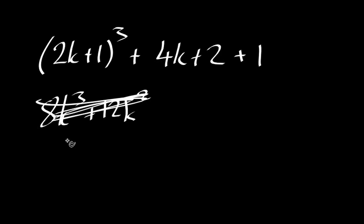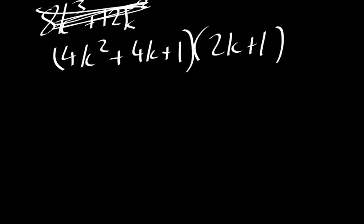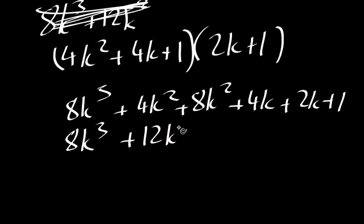So our 2k plus 1 squared is going to be 4k squared plus 4k plus 1. And now we need to multiply that by 2k plus 1. So we're going to get 8k cubed plus 4k squared plus 8k squared from these two, plus 4k plus 2k plus 1. Combining all my terms gives me 8k cubed plus 12k squared plus 6k plus 1.